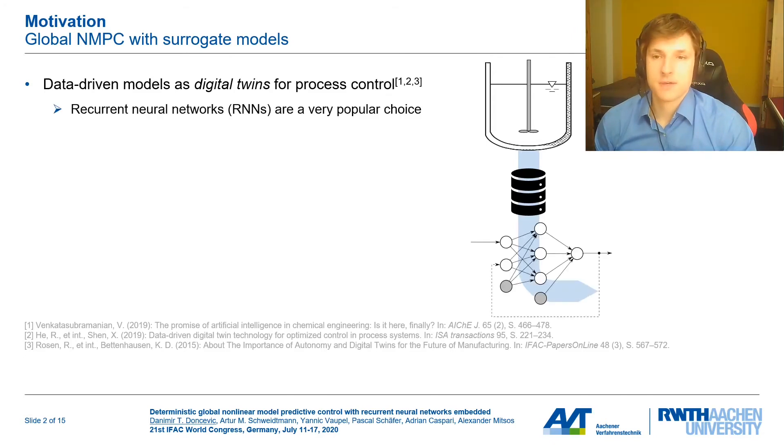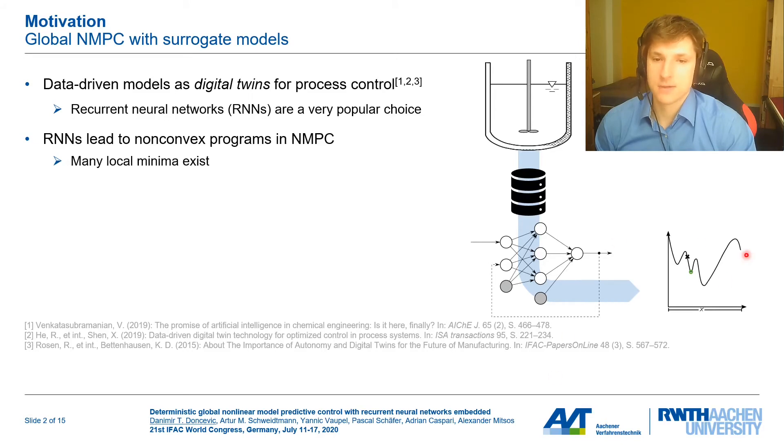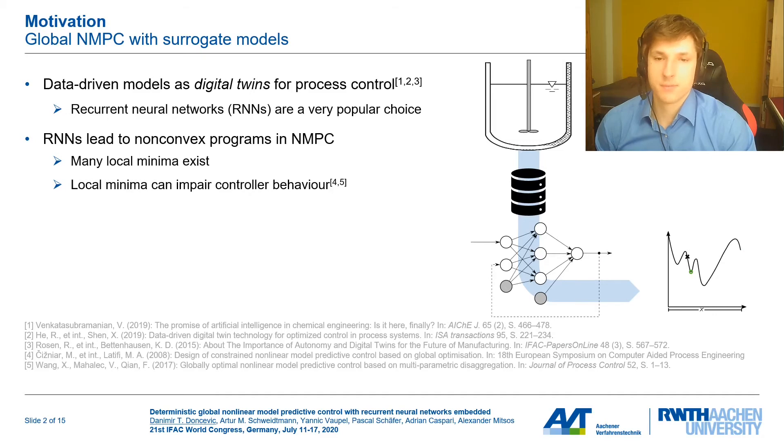Among these data-driven models, recurrent neural networks, as shown here, are a very popular choice. But when we use neural networks as models of the process, optimization problems in MPC become non-convex and many local minima may exist, as indicated here. It was already shown in previous works by Seganello and others that these local minima can lead to sub-optimal controller behavior for some processes, for example when there are multiple input configurations that would lead to the same setpoint.